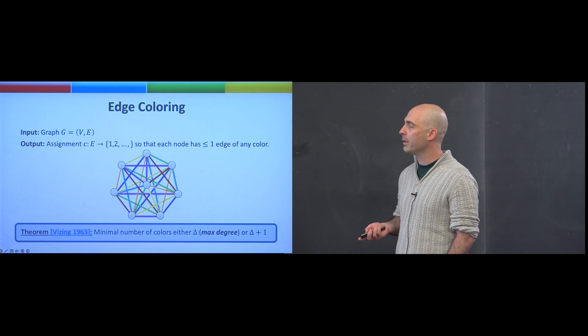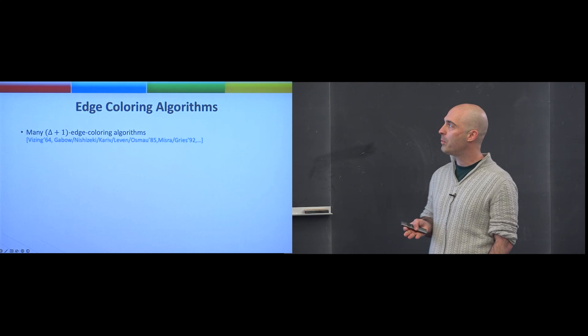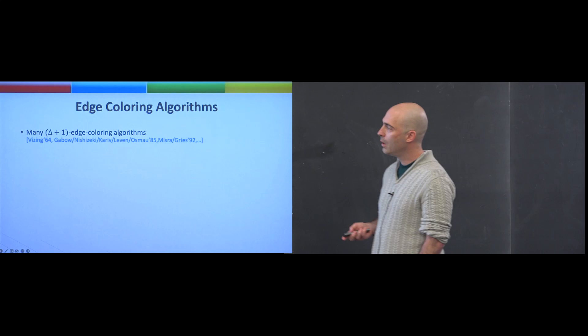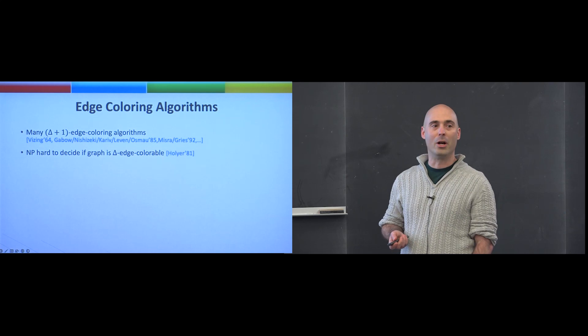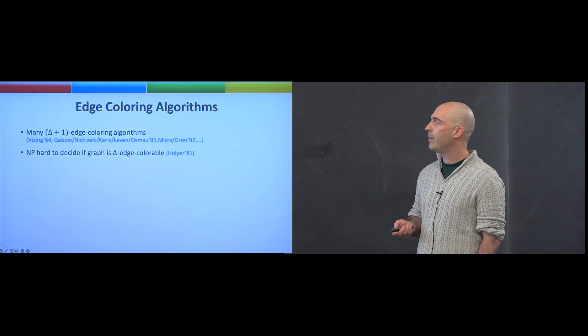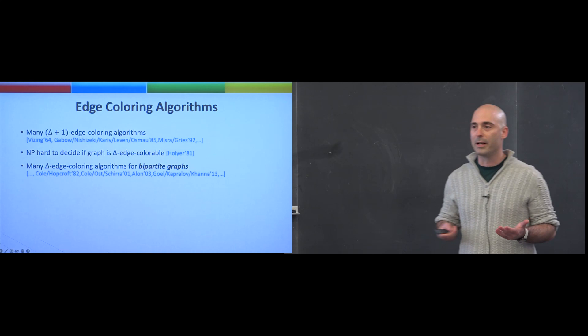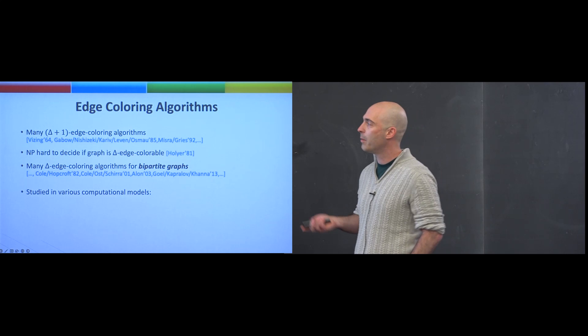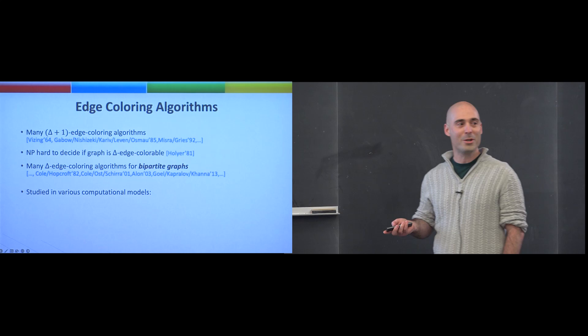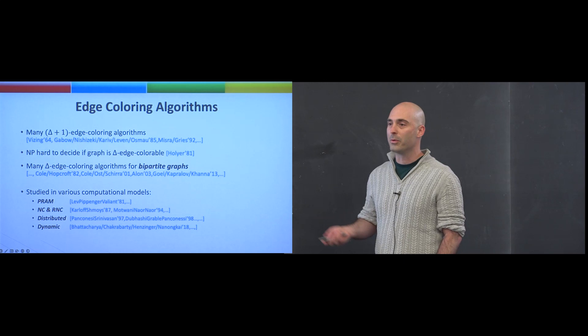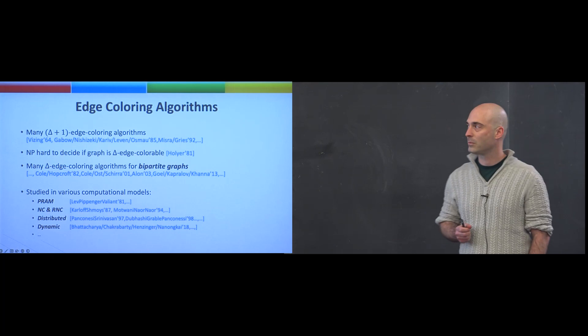Let me tell you a little bit about algorithms for finding this minimal number of colors. Vizing's theorem and follow-up papers give algorithms that get delta plus one many colors. This is in some sense tight, because actually determining if delta colors suffices is NP-hard, by a classic result of Holyer. In contrast, for bipartite graphs, König's theorem implies that delta colors are sufficient, and there's a score of algorithms that achieve that as well. This is one of those basic problems on which we test out new ideas in different models of computation — parallelism, distributed algorithms, dynamic algorithms, and whatever computation model you could think of.